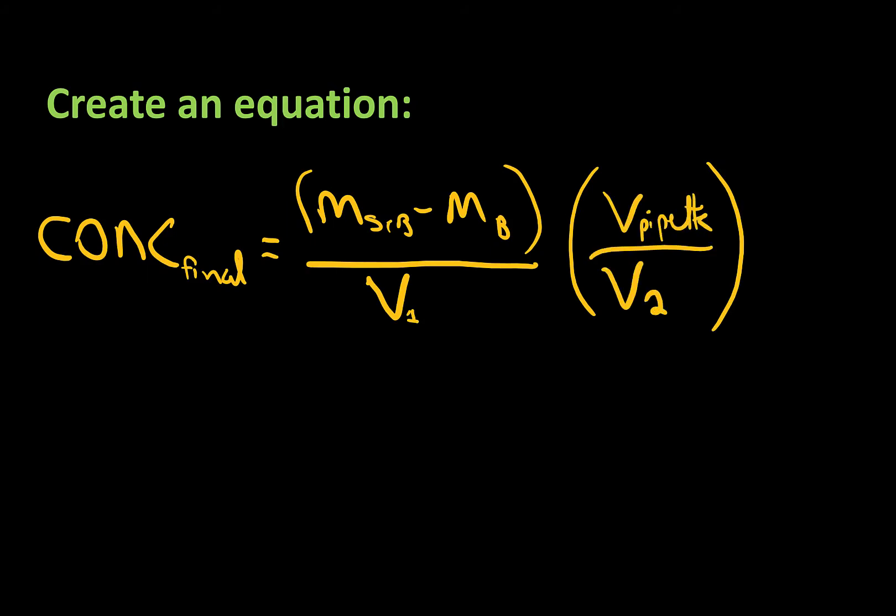Alright let's put all of these things together. The concentration of our final solution is going to be dependent on the mass divided by the volume, that's our initial concentration, multiplied by this thing over here. This is a dilution factor. So C1V1 equals C2V2. If you just rearrange those equations, that's actually what you're getting here. It's the initial volume divided by the final volume.